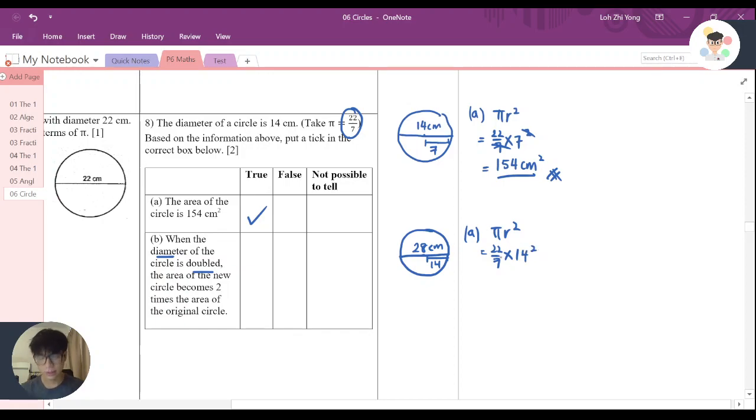Is that correct? Now let's continue. And if you try to calculate either manually or using a calculator, you'll notice that the answer now is 616 cm squared.